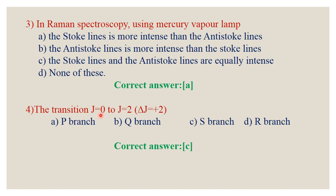Question number 4: The transition J = 0 to J = 2, that is delta J = +2, represents the S branch. So delta J = +2 is the S branch. The answer is C.